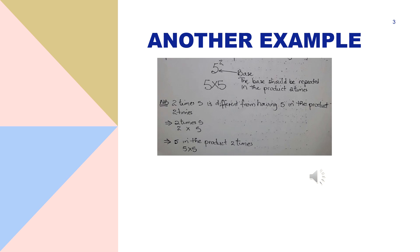This is another example. This time we're looking at the problem from the perspective of the base. The base is the number that is repeated in the product. Now here our base is 5 and we will not be writing 5 times 2, we will be writing 5 times 5 so that we have 5 repeated in the product twice. There's a difference between having 2 times 5 as opposed to having 5 in the product 2 times.